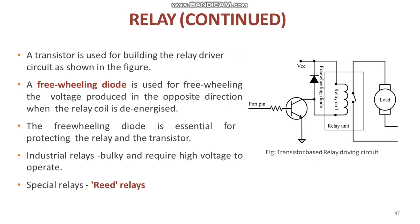The transistor-based relay driving circuit can be explained as follows. A transistor is used for building the relay driver circuit as shown in the diagram. The relay is normally controlled using a relay driver circuit connected to the port pin of a processor or a controller. A free wheeling diode is used for free wheeling the voltage produced in the opposite direction when the relay coil is de-energized. Most industrial relays are bulky and require high voltage to operate. Special relays called reed relays are available for embedded applications requiring switching of low voltage DC signals.